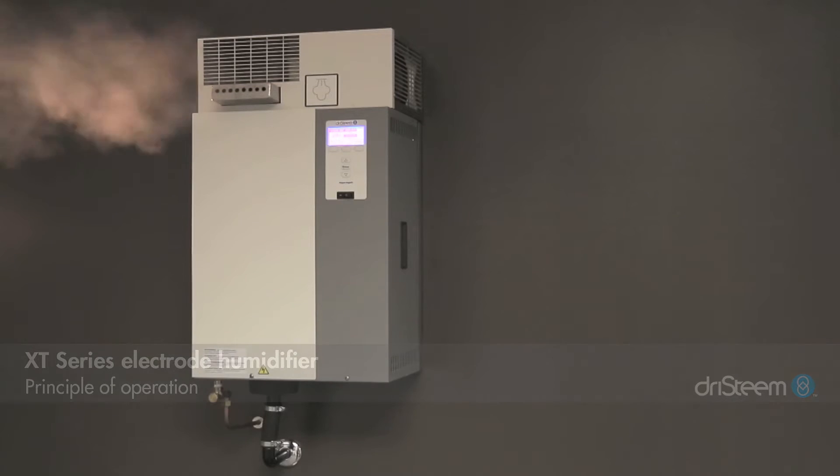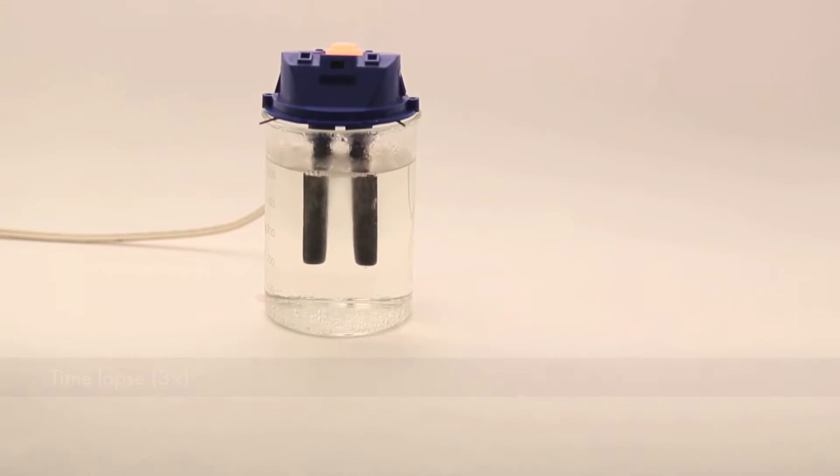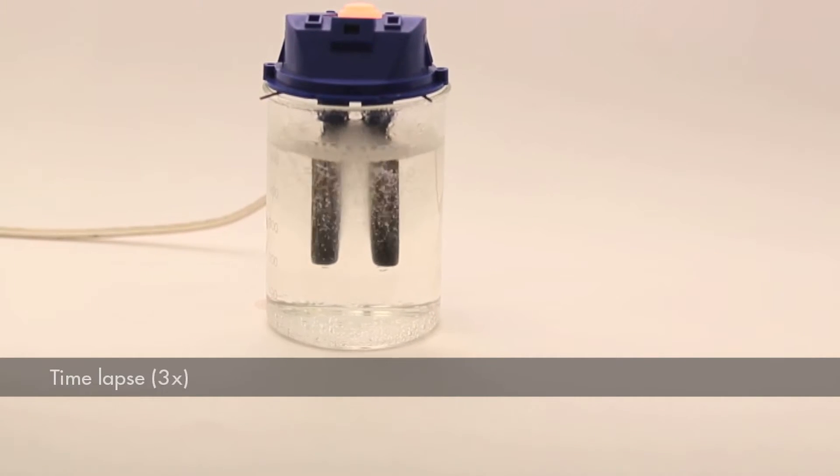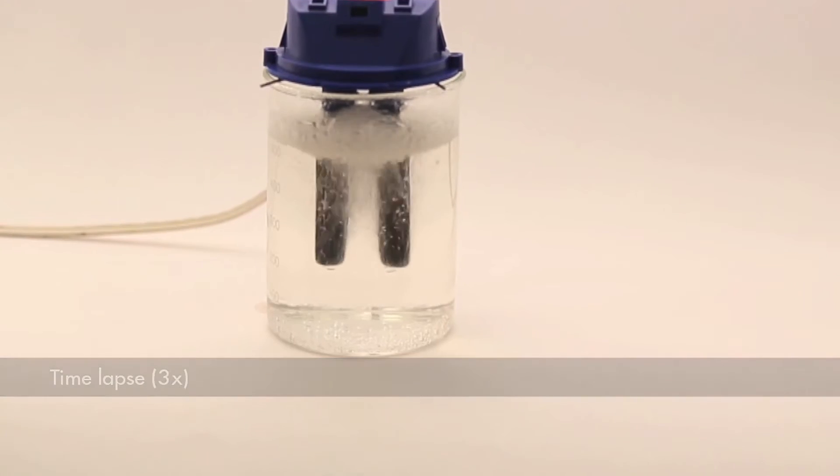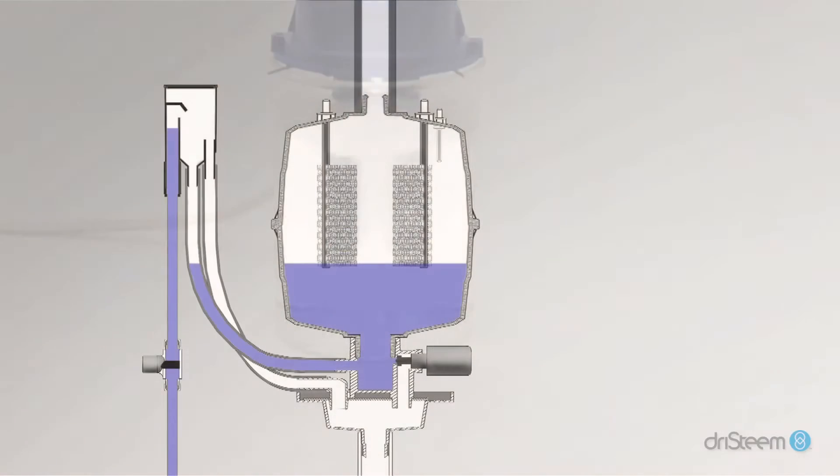Dry Steam XT series electrode steam humidifiers operate on the principle that electrical current in conductive water causes heat. Enough current between submerged electrodes in conductive water causes enough heat to boil the water into steam, and it works very predictably.